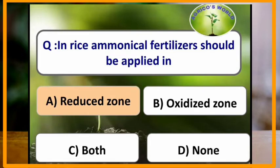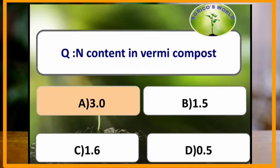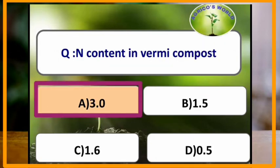In rice, ammoniacal fertilizers should be applied in which zone? In rice, ammoniacal fertilizers should be applied in the reduced zone. Nitrogen content in vermicompost is 3%.